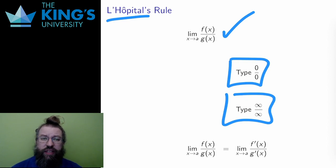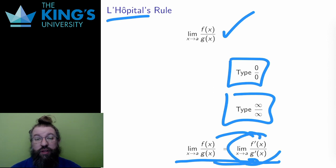What does the rule say? Simply that I can take the derivative of the numerator and denominator, and the limit is the same. How does this help? Often the derivative limit will be easier to work with.